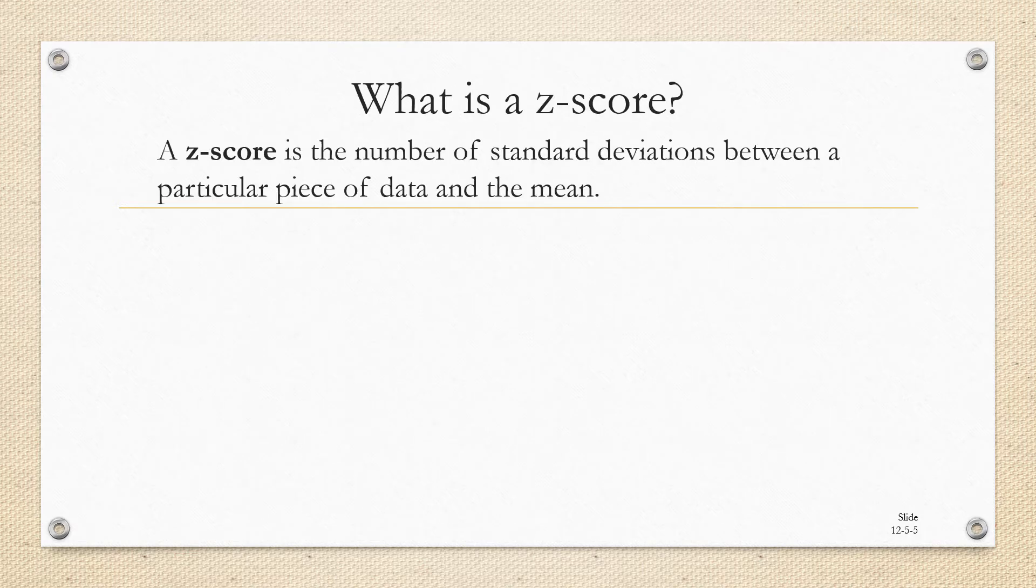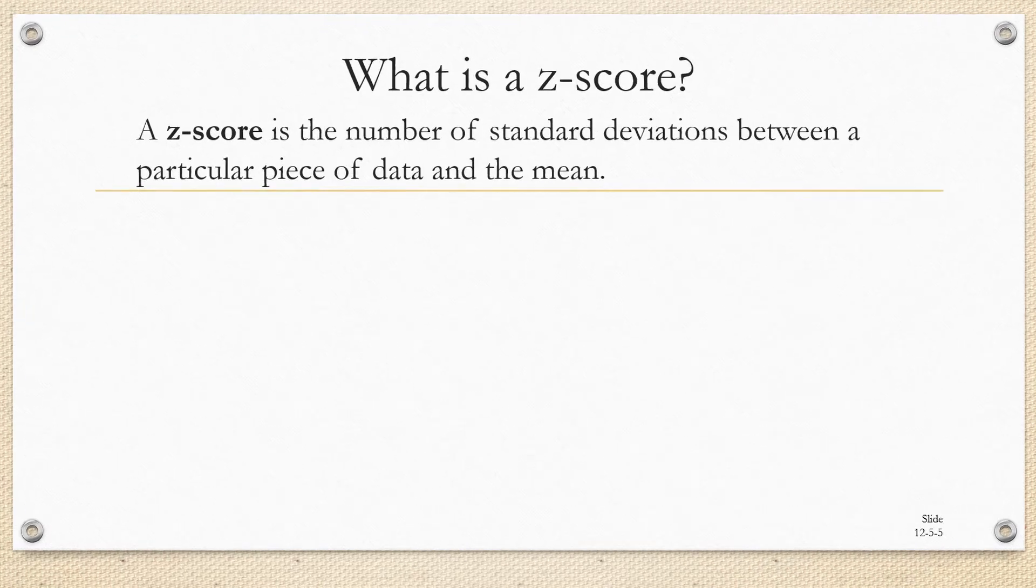So what is a Z score? A Z score is the number of standard deviations between a particular piece of data and the mean.